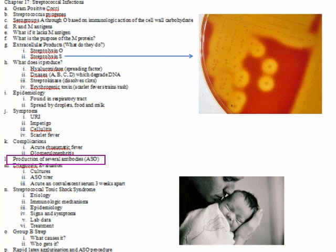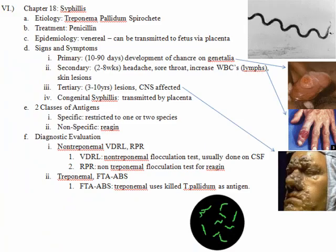Group B strep: caused by Streptococcus agalactiae, it can cause meningitis in newborns. Syphilis is caused by Treponema pallidum, a spirochete that looks like a spiral under the microscope — very difficult to isolate and grow. It's easy to treat with penicillin, which is why we don't see it very often anymore.